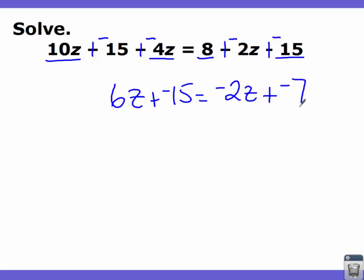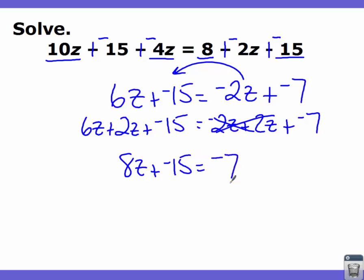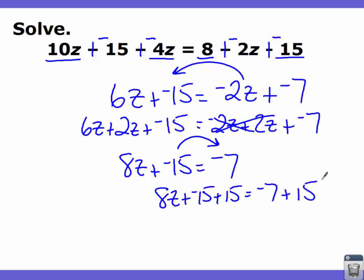So now this one looks like a standard problem — now we solve it. I get the negative 2z and move it over: negative 2z plus positive 2z plus negative 7, and then 6z plus 2z plus negative 15. Our 6z and our 2z make 8z plus negative 15 equals. Over here, my 2z's are eliminated and I'm left with negative 7. Now I move the negative 15: 8z plus negative 15 plus 15 equals negative 7 plus 15. My 15s are eliminated, and 8z equals positive 8. Dividing by 8 on both sides, z equals 1.